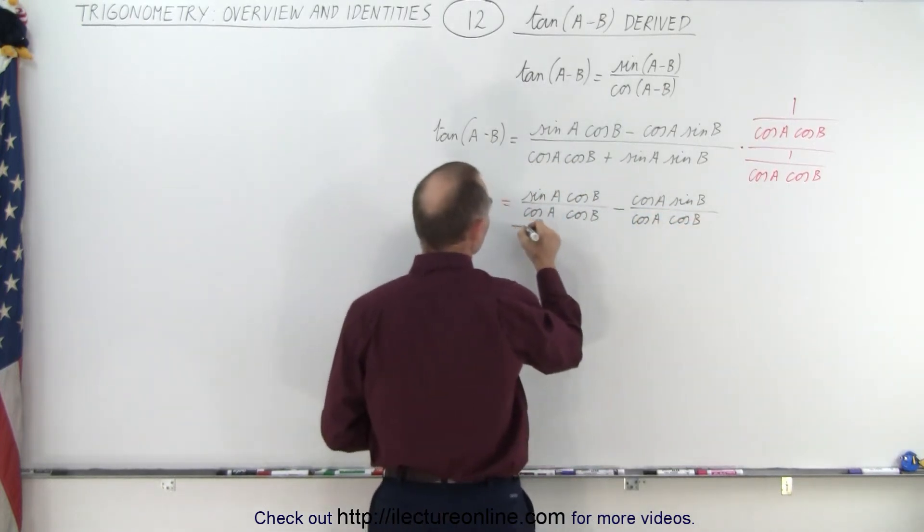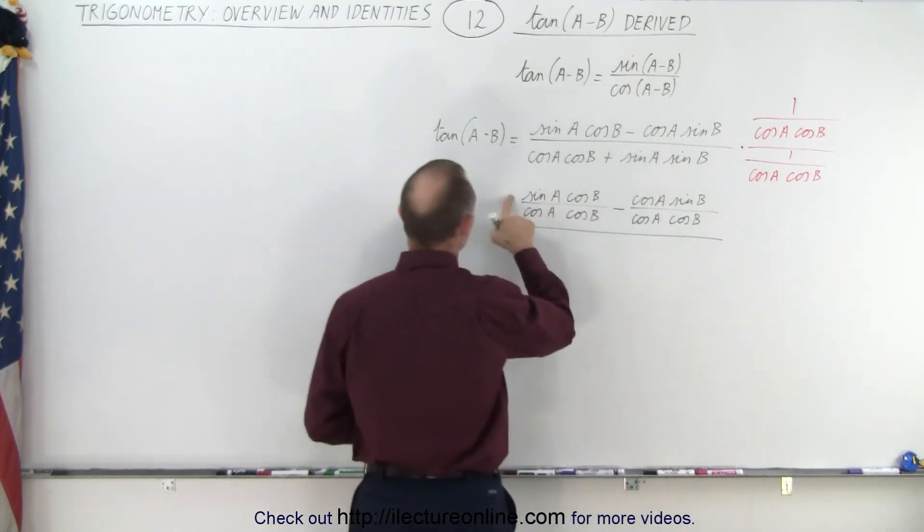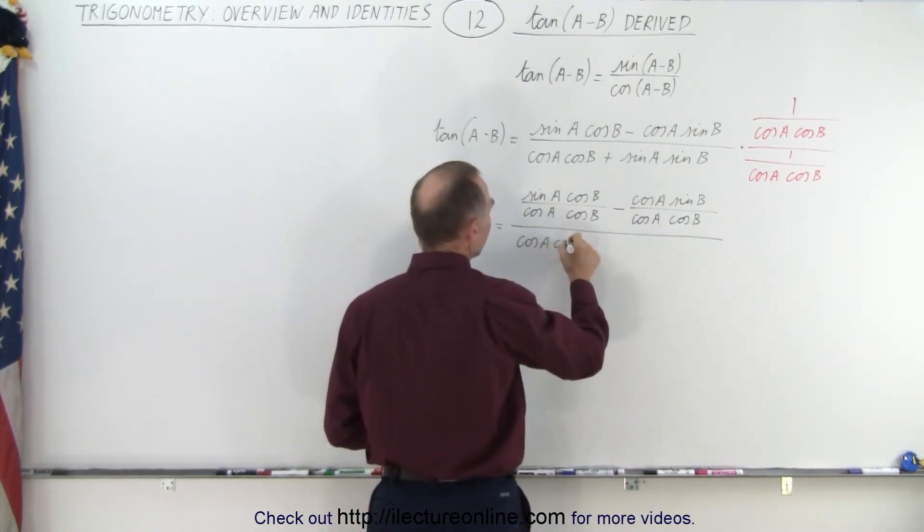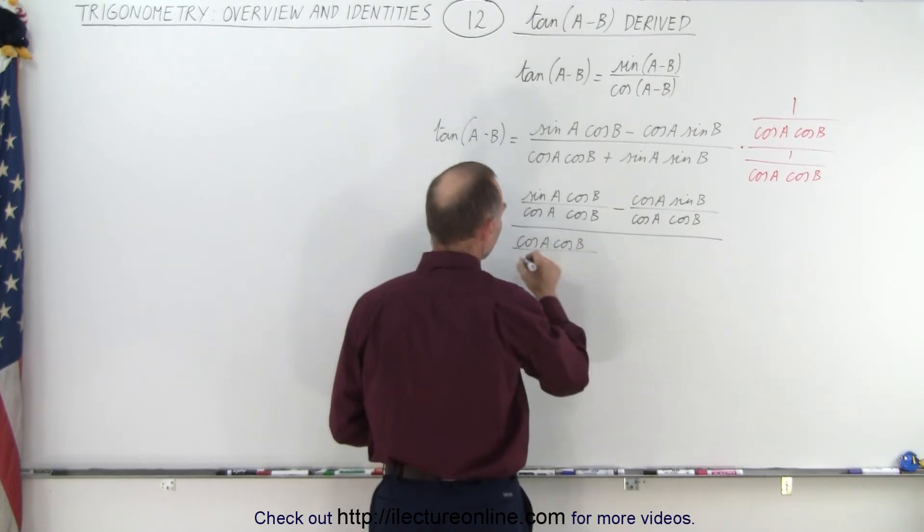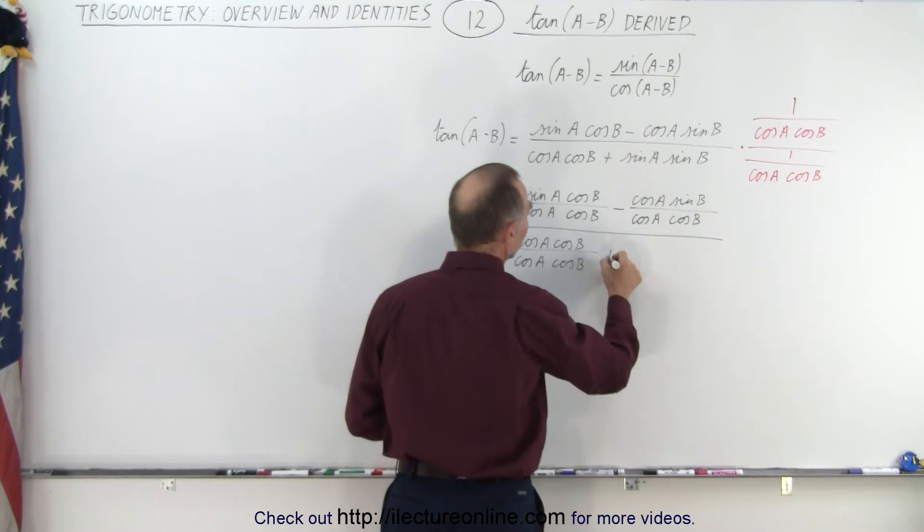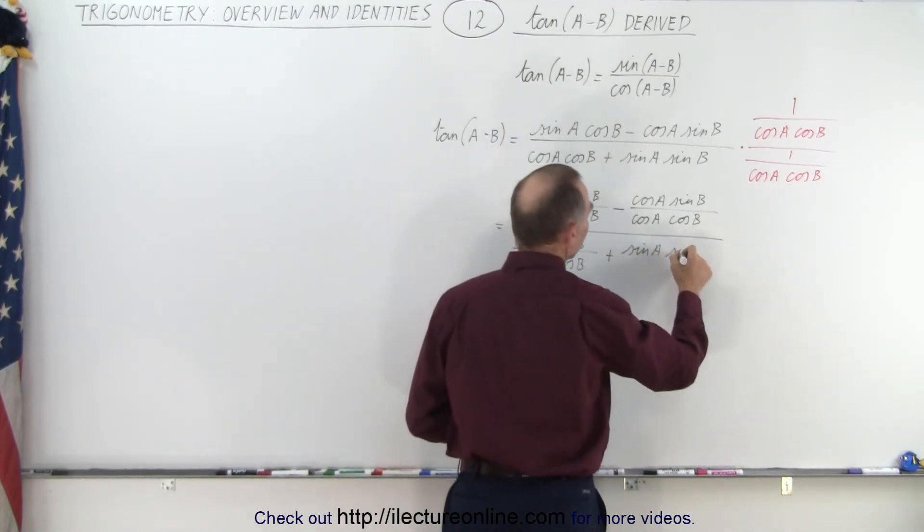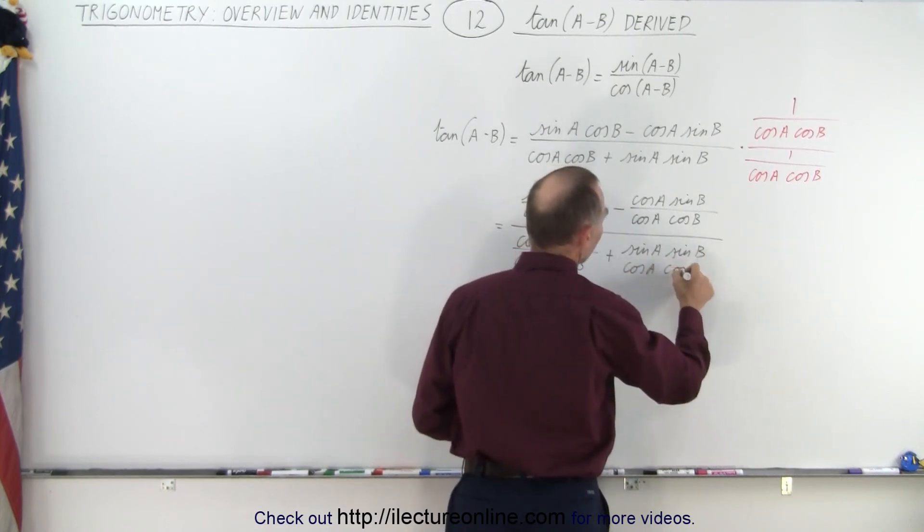Let me put an equal sign over here. So we have the cosine A cosine B divided by cosine A cosine B plus sine A sine B over the cosine A cosine B.